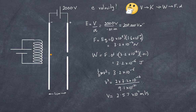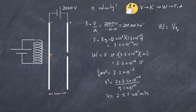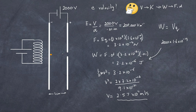That was the long way. Remember that work done equals simply VQ — so you can get the same answer directly by multiplying 2000 V by 1.6×10⁻¹⁹ C. That's the shortcut for finding the velocity of a charge passing through an electric field.